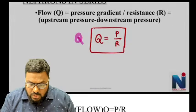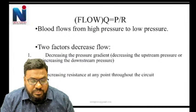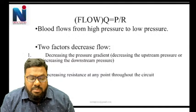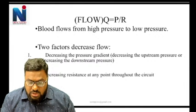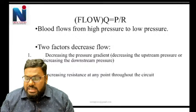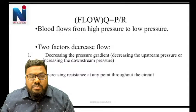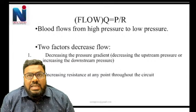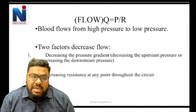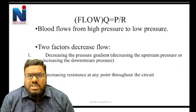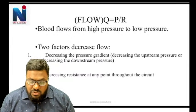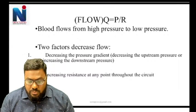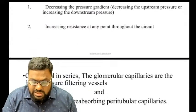Blood flows from high pressure areas to low pressure areas. There are two factors that decrease blood flow: first, a decrease in pressure directly reduces flow; second, an increase in resistance at any point in the circuit also decreases flow. So a fall in pressure or a rise in resistance both decrease renal plasma flow and GFR.